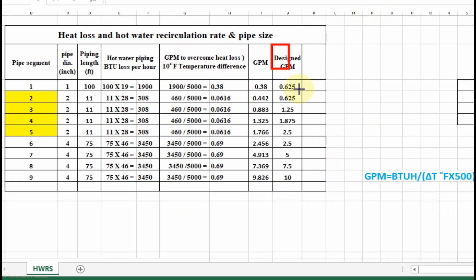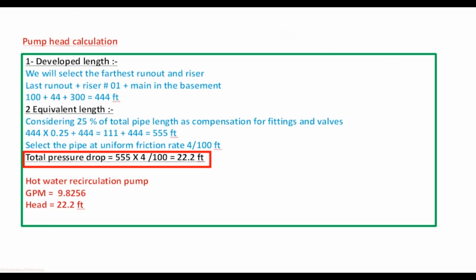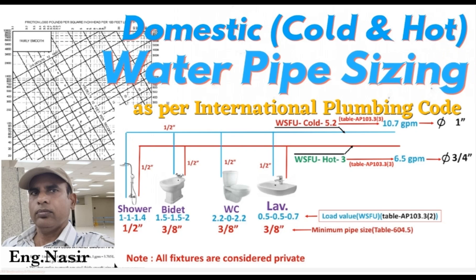We have calculated the GPM for each pipe segment. Now you can select the pipe size for the hot water recirculation piping network using the International Plumbing Code. After designing the pipe sizes, you can calculate the actual pressure drop in the piping and accordingly select the head for the hot water recirculation pump. For designing hot water recirculation piping, you can watch our video on domestic cold and hot water pipe sizing — the link will be in the description. Thank you very much.